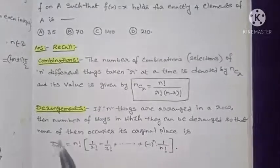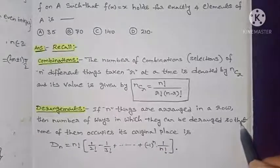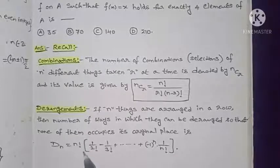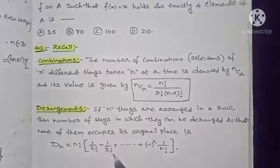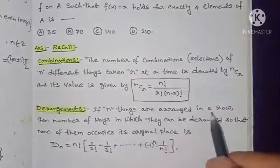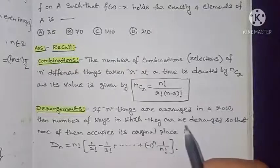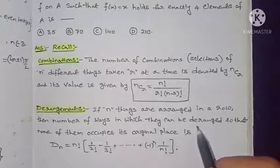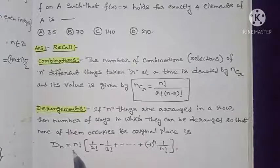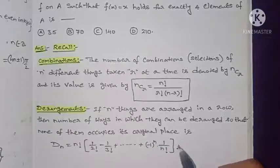Second definition — derangements: if n things are arranged in a row, the number of ways they can be deranged so that none of them occupies its original place is denoted by Dn, given by: Dn = n! × (1/2! − 1/3! + … + (−1)^n × 1/n!).